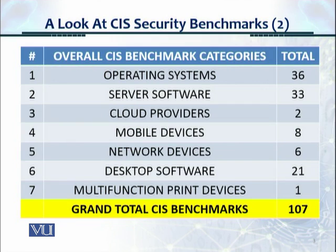Now, this is a breakup of CIS. There are about 107 control benchmarks in the latest release, which was available at the time this recording was done. There are seven different categories for the CIS benchmarks: operating systems, servers, cloud providers, mobile devices, network devices, desktop software, and multifunction print devices. The highest number is for operating systems, then for server software, and then for desktop software.